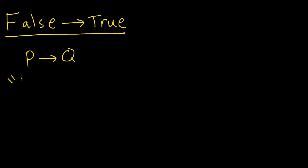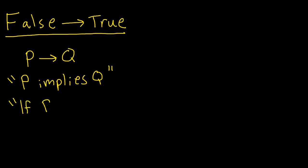You could read this as P implies Q, or if P, then Q, where P and Q are supposed to be statements that could either be true or false. And you've probably seen the following truth table.